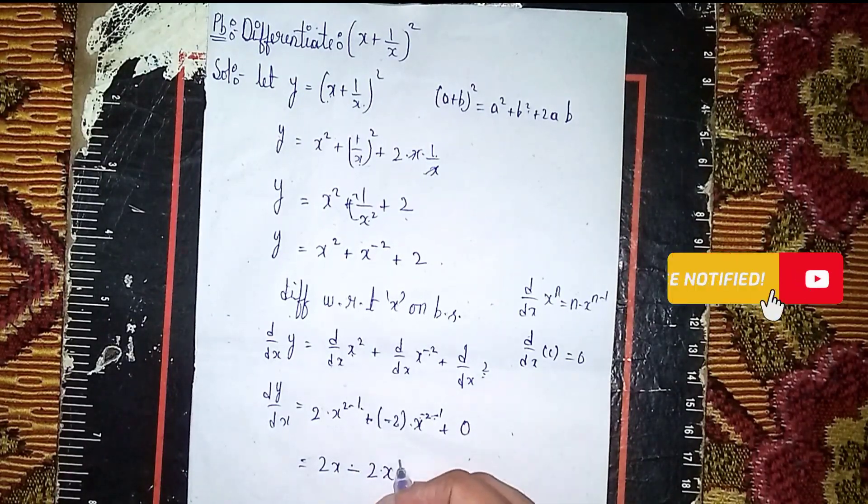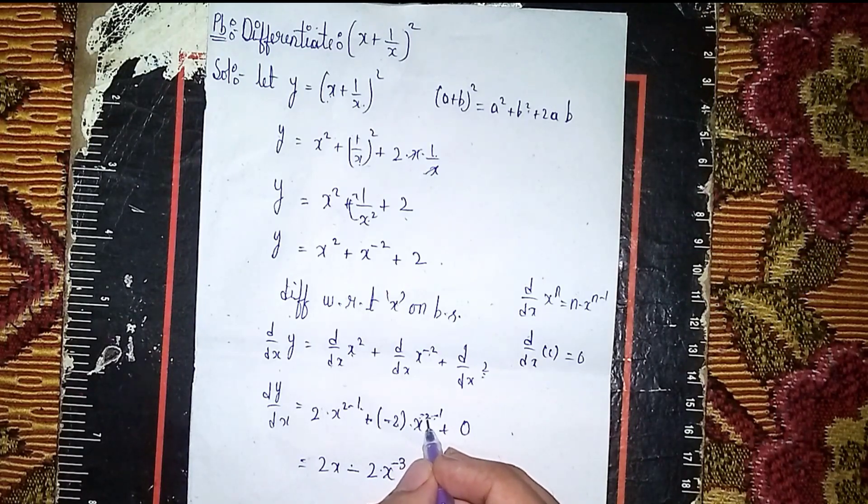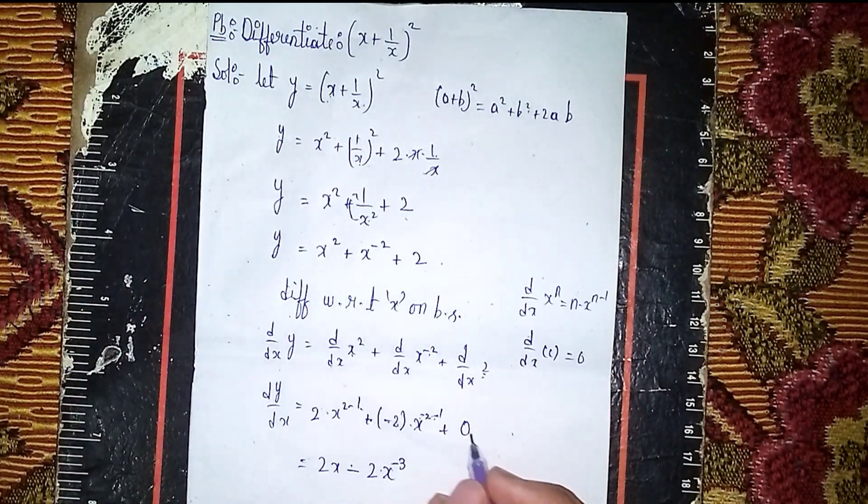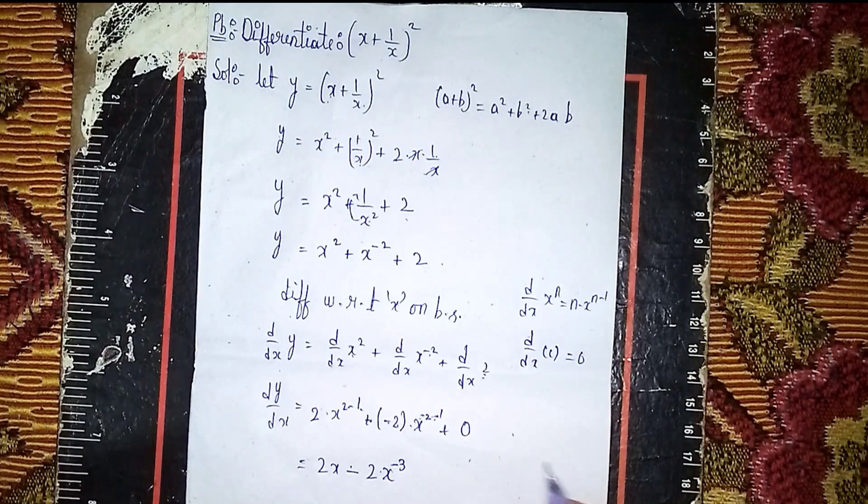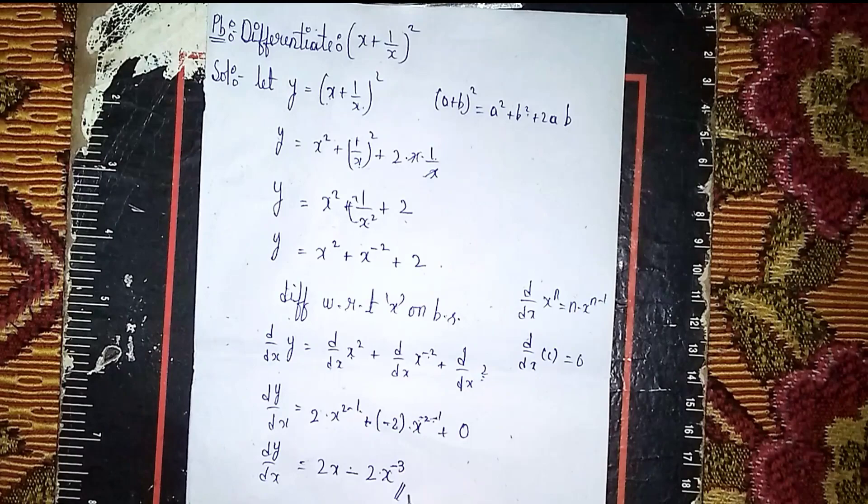The sign is minus because the symbol of 2 is the bigger number. So this is our solution, this is our answer: dy/dx = 2x - 2x^(-3). Thanks for watching.